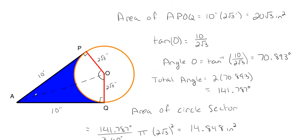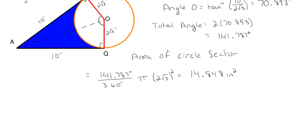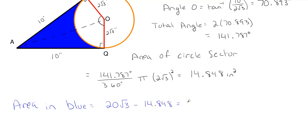We have the total area of the kite section at 20 square roots of 3 inches squared, and we just subtract the circle sector area of 14.848 inches squared. The area in blue equals 20 square roots of 3 minus 14.848 inches squared, which gives us 19.793 inches squared, rounding at the end. That's how you find the blue area for this particular problem.